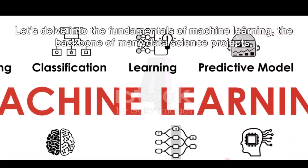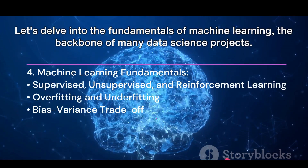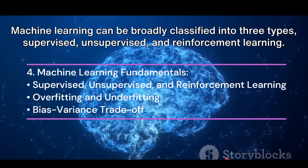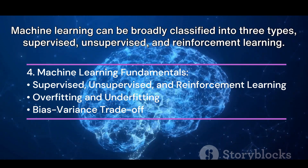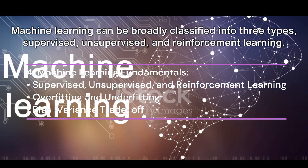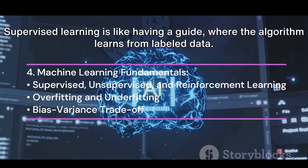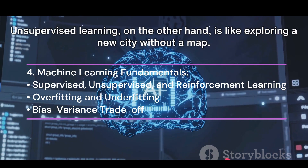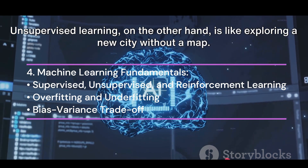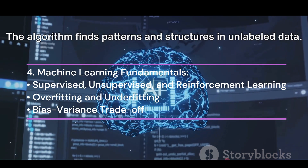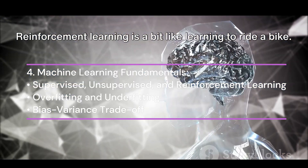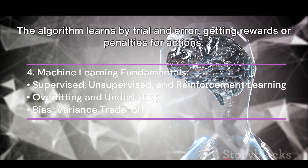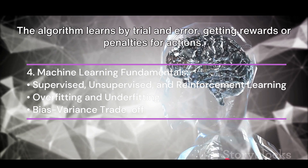Let's delve into the fundamentals of machine learning, the backbone of many data science projects. Machine learning can be broadly classified into three types: supervised, unsupervised, and reinforcement learning. Supervised learning is like having a guide, where the algorithm learns from labeled data. Unsupervised learning is like exploring a new city without a map — the algorithm finds patterns and structures in unlabeled data. Reinforcement learning is a bit like learning to ride a bike, where the algorithm learns by trial and error, getting rewards or penalties for actions.